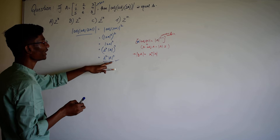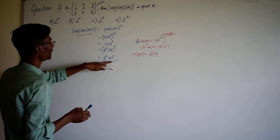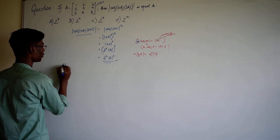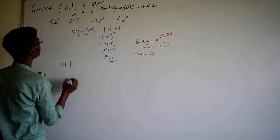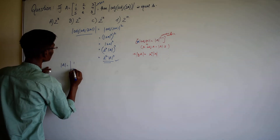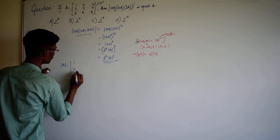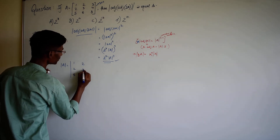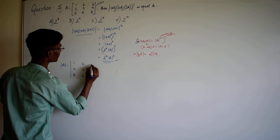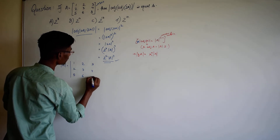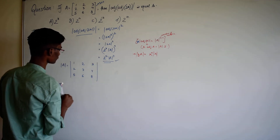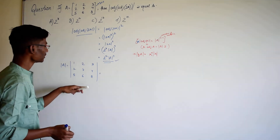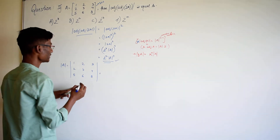Now we can find the value of determinant of A and substitute it in. So our matrix is: row 1: 1, 2, 5; row 2: 2, 3, 6; row 3: 3, 4, 8. Now we apply some elementary column operations on this.